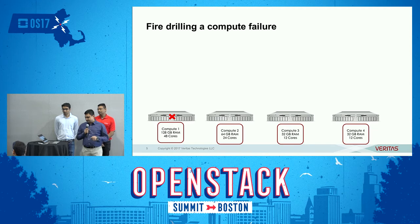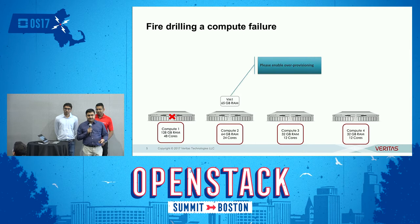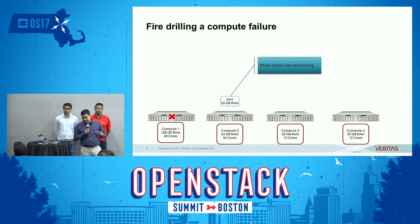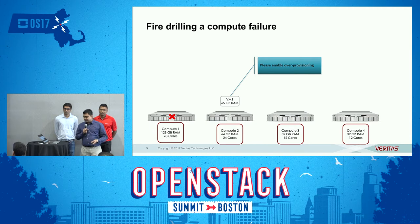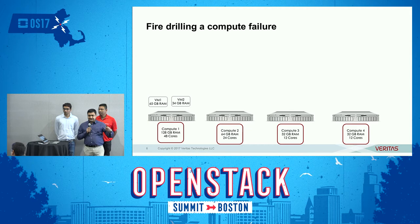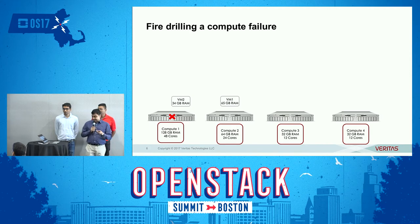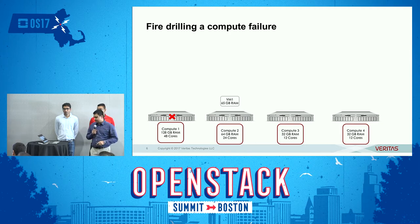When the server goes down and you're trying to place the virtual machine, if you go through a fire drill rather than a real failure, you can figure out that the application is going to fail because the VM cannot be hosted on a smaller server. The recommendation would be to enable over-provisioning on the server. Once that is done, we can run the fire drill again and both VMs will be moved successfully — and this is what will happen when the real failure occurs.